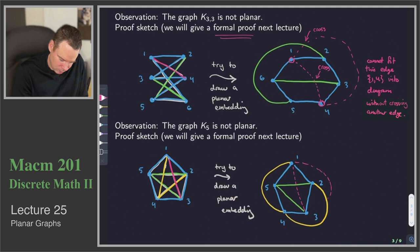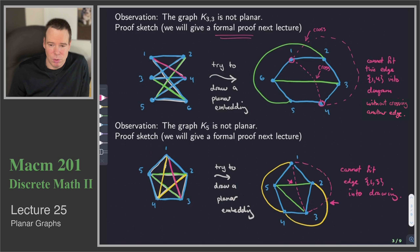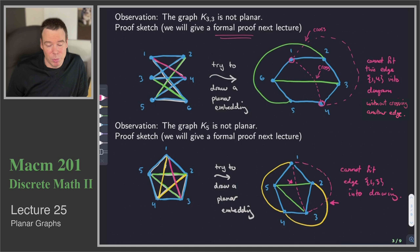There's a crossing that happens there whichever way I draw it. We cannot fit edge 1-3 into the drawing without crossing an existing edge. That's just to get a feel for why K33 and K5 are not planar — we haven't proved it, we just tried to build up the intuition. There's just one extra edge and that's why they're not planar. That's actually what we're going to do in the next lecture for our formal proof — we will come up with properties that planar graphs must have, show these two graphs don't have those properties, and therefore they're not planar.